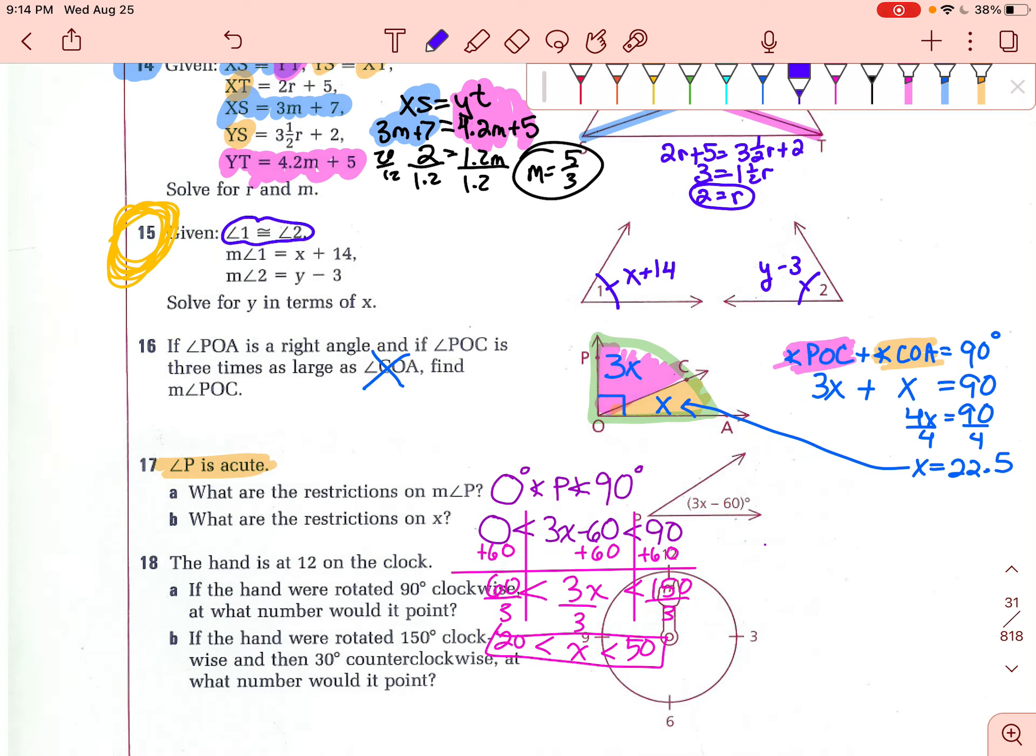These two angles are congruent to each other. Therefore, x plus 14 has to equal y minus 3. Okay, so that's my equation. Then it says solve for y in terms of x. We're just going to add 3 to both sides. And we get our x plus 17 is equal to y. We solve for y in terms of x.